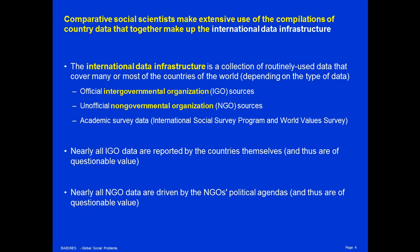Finally, there are academic survey data produced systematically by university professors. The two biggest examples are the International Social Survey Program, ISSP, and the World Values Survey, WVS. These two surveys are multi-country surveys done by universities in partnership around the world. The ISSP has something like 45 countries participating. The World Values Survey has more than 80 countries that have participated in it. Because these are done by academics, they're done slightly differently in every country, and they tend to be very contingent on funding. If a group of scholars in a country can get funding to participate, they do. But very often funding is not available, and so a country disappears from the survey, only to reappear later when funding is made available once again.